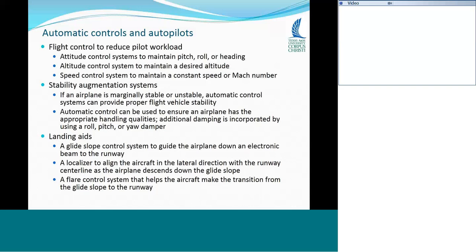The last reason to have automatic control on a manned aircraft is as a landing aid. There are systems including a glide slope control system that brings you in on the right glide slope to the end of the runway, a localizer to line you up pointing in the right direction down the runway, and a flare control system. The airplane comes in to land, the nose comes up — it flares, which is basically a stall right above the ground, and it drops gently onto the ground.